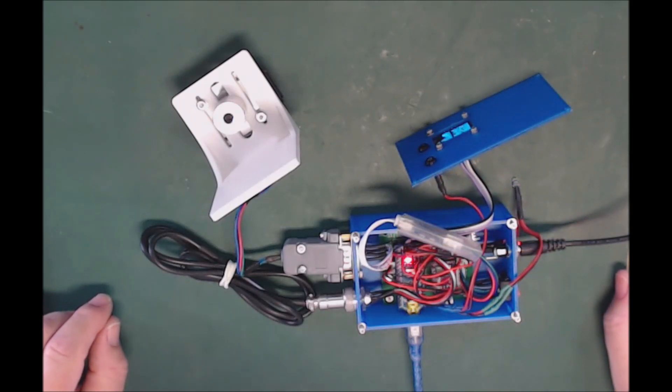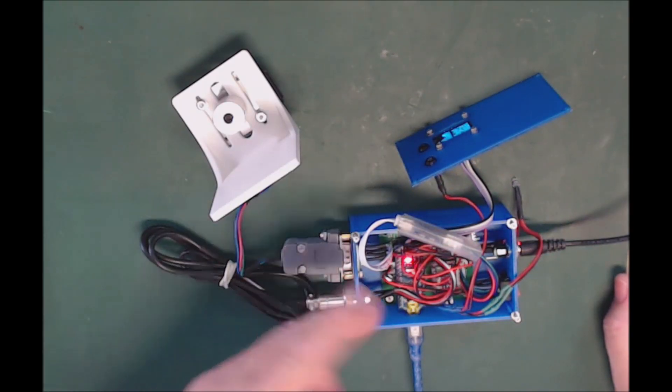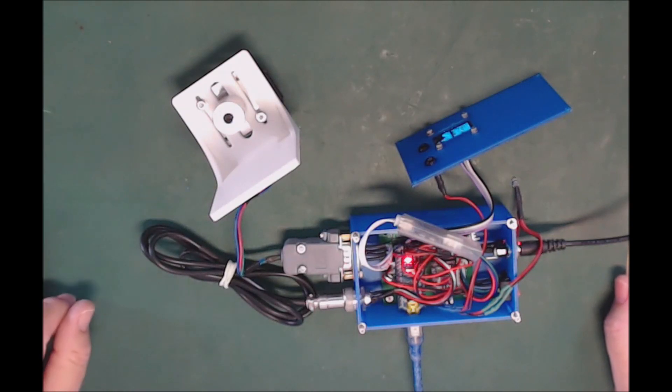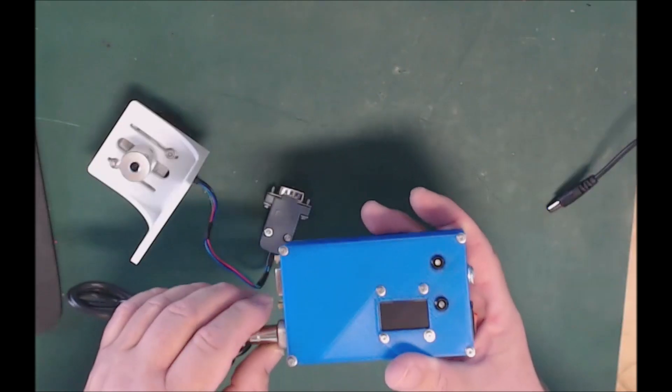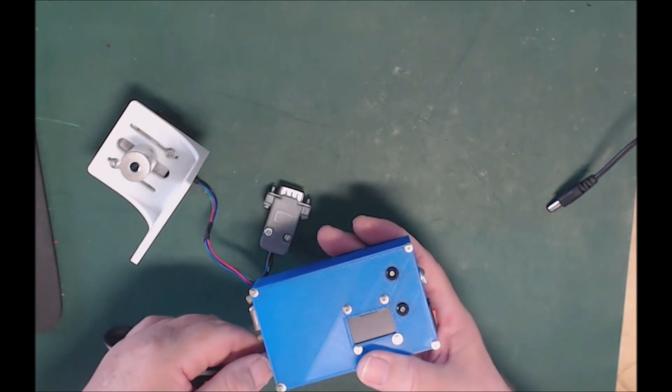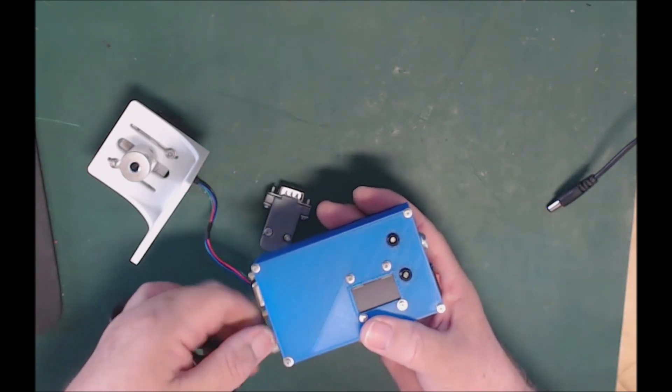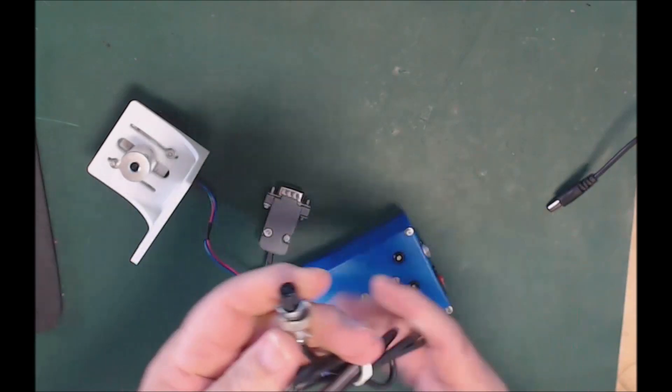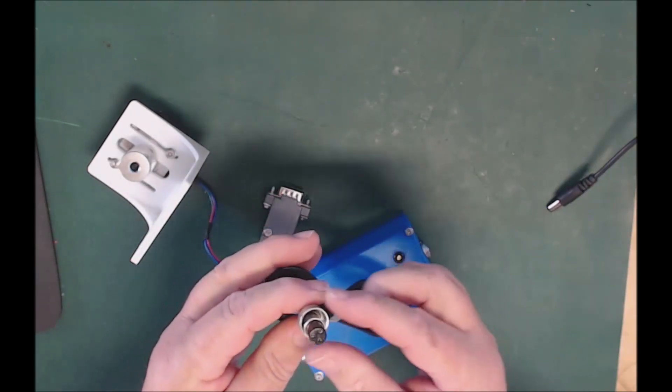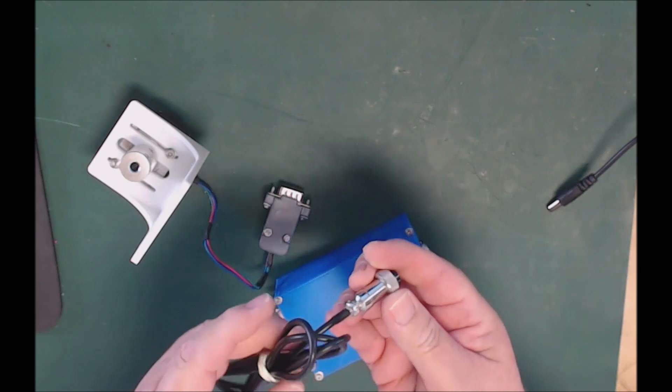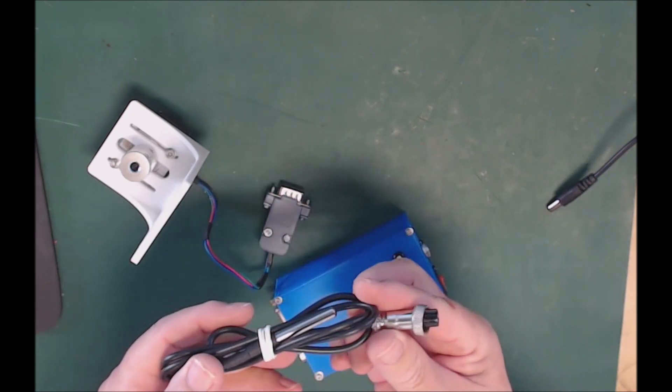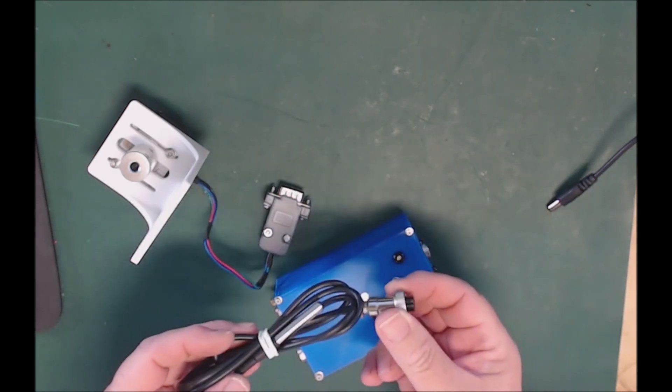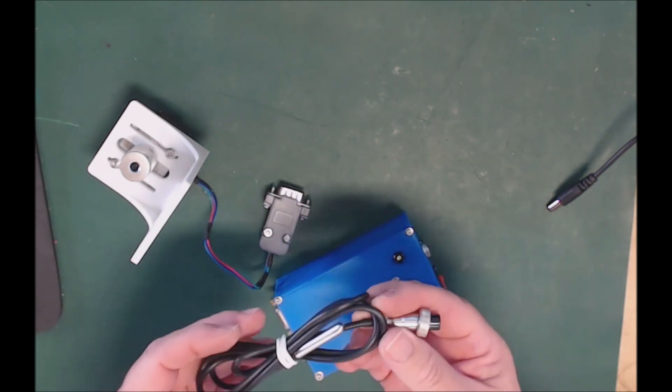So basically what I'll do is put the cover back on and then show it working. We've got a temperature probe connected to a GX12 connector. So this screws on, means your temperature probe is never going to fall off.